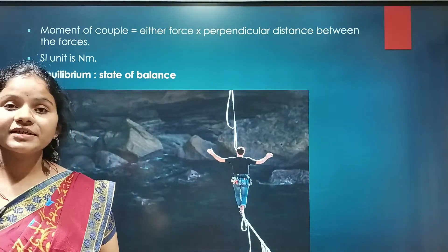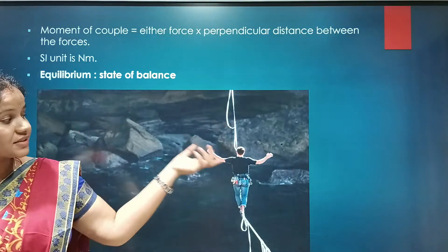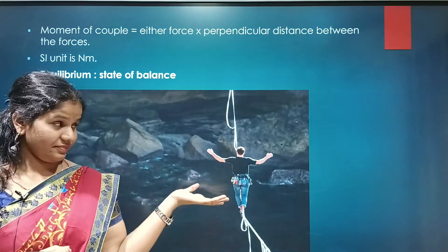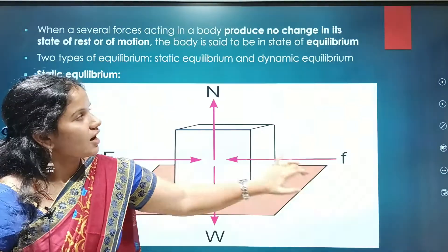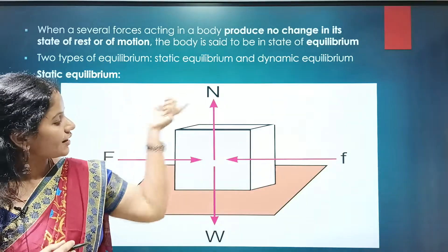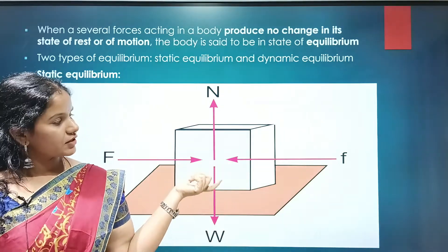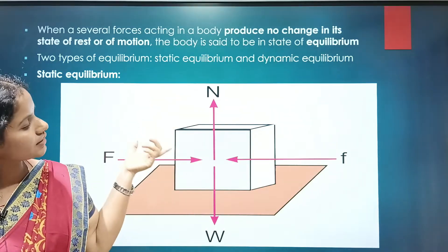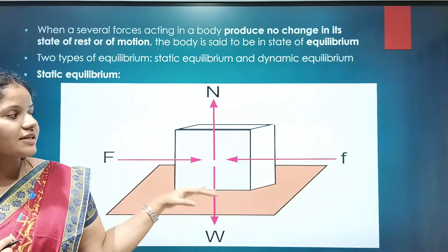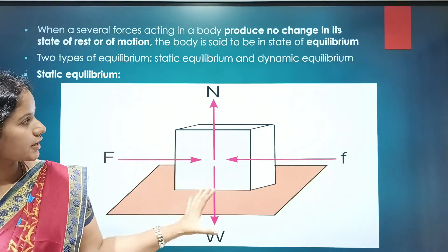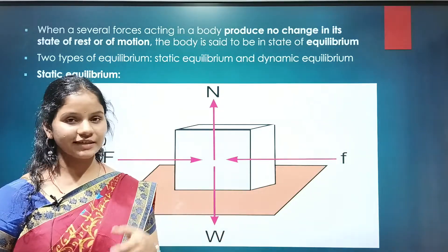Now we will see what equilibrium is. You can see a person walking on a rope, just balancing his body. Equilibrium is nothing but a state of balance. When several forces are acting on an object, it will not change its state — whether it is at rest or in motion. Such a body is said to be in equilibrium. Equilibrium is of two types: static equilibrium and dynamic equilibrium.